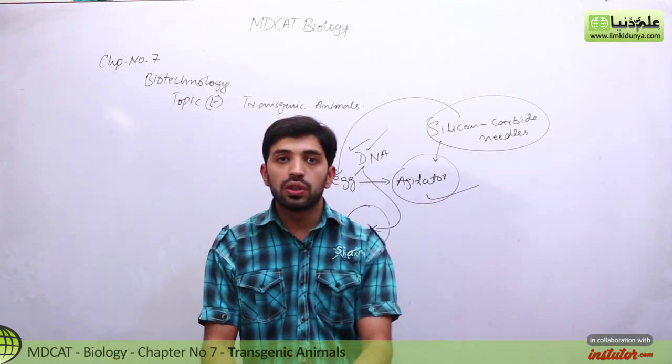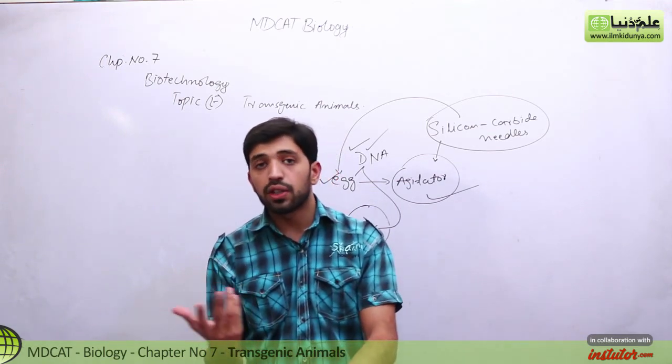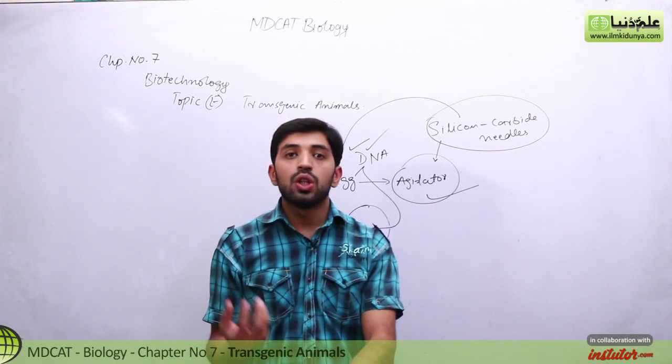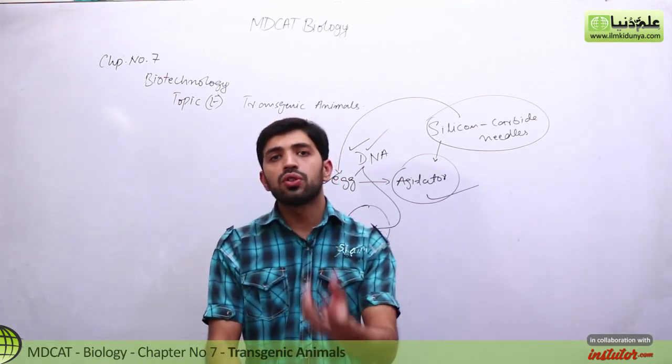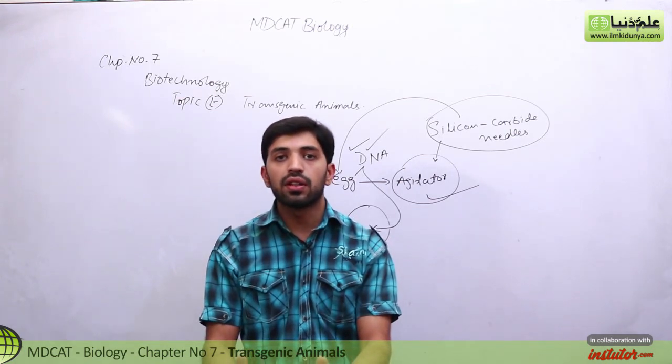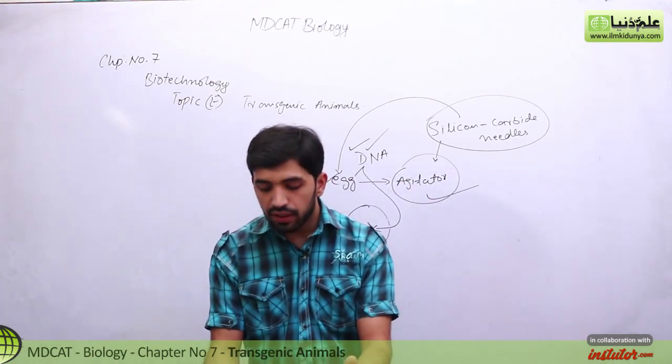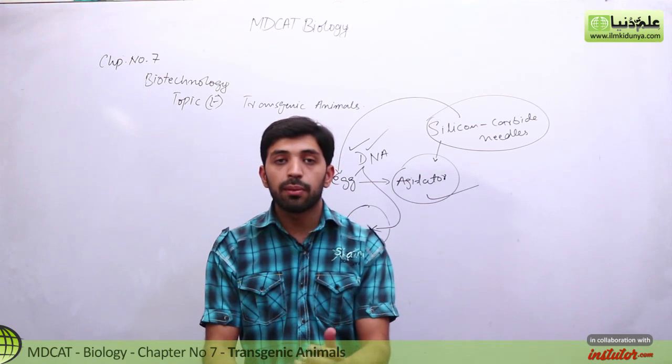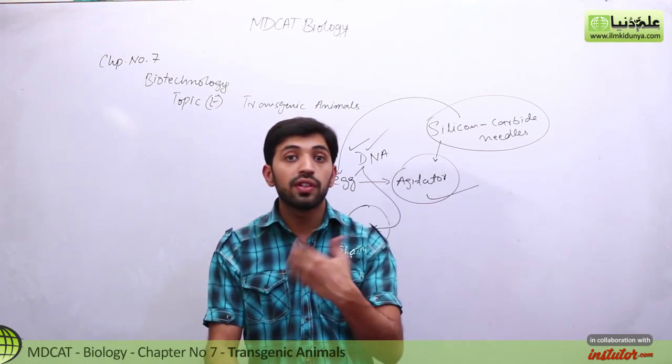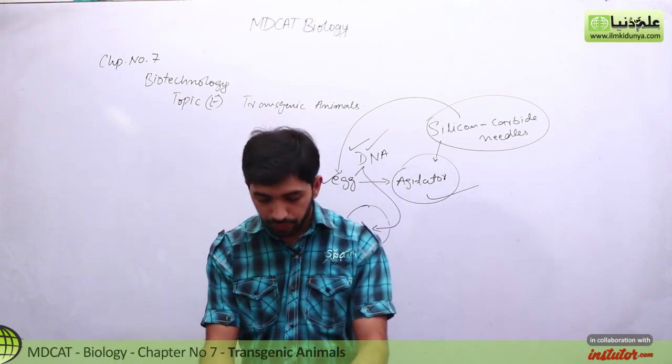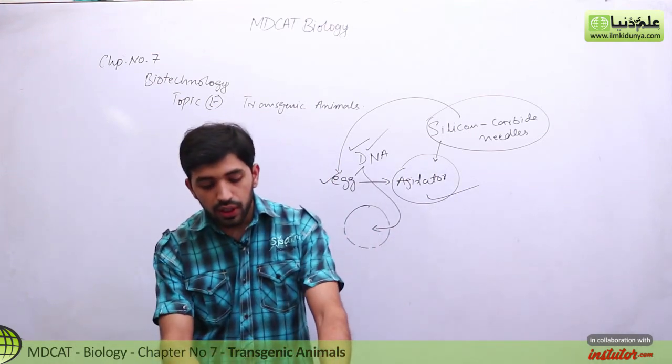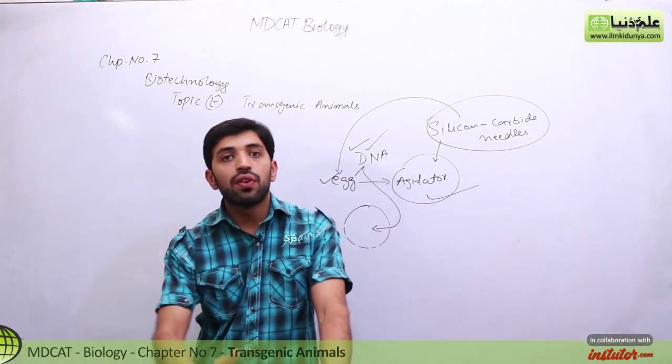Then, the milk from animals like goats, cows, etc., is secreted, and from that milk we obtain our product, like antithrombin 3, blood clotting factor, and treatments for different types of diseases like cystic fibrosis, cancer, and blood diseases. So for them, we are doing gene farming.